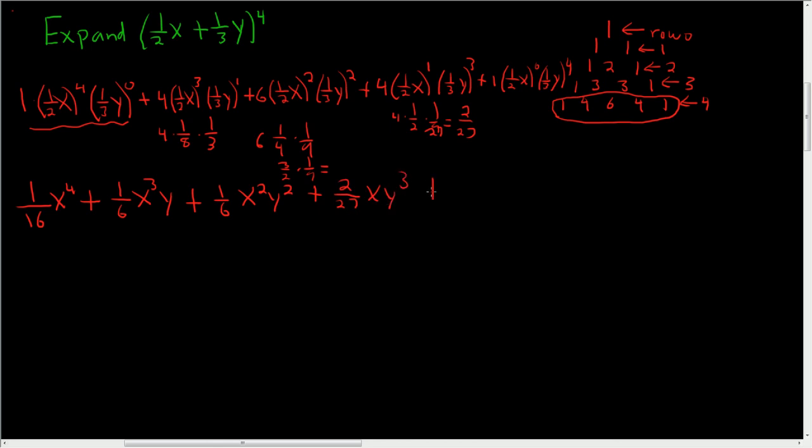And the last one finally is plus. Well, 1 3rd to the 4th power is 9 times 9. So 1 over 81. y to the 4th. So you just have to be really, really careful with problems like this. Just take your time with it. And there is the final answer.